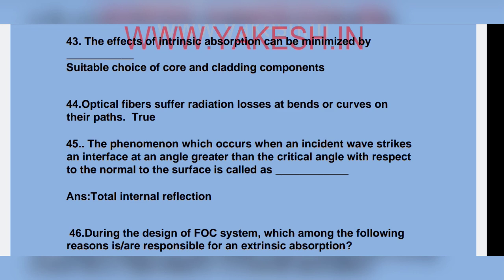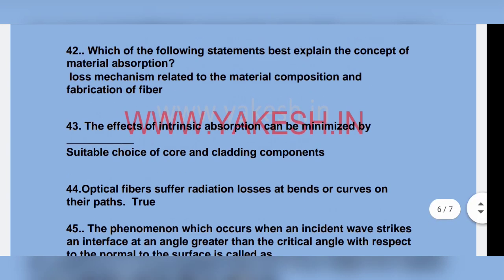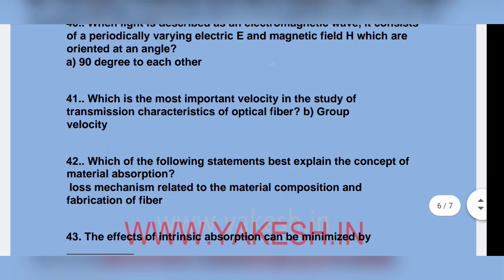Optical fiber suffers radiation losses at bends or curves on the path. True. The effect of intrinsic absorption can be minimized by suitable choice of core and cladding components. Which of the following statements best explains the concept of material absorption — loss mechanism related to material composition and fabrication of fiber.